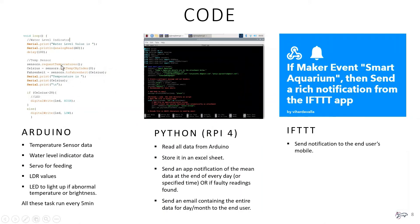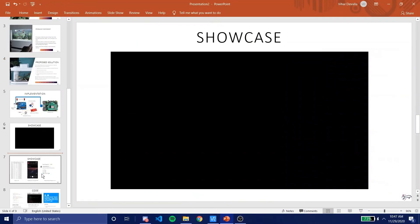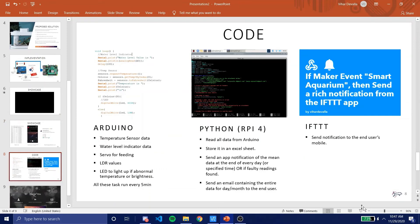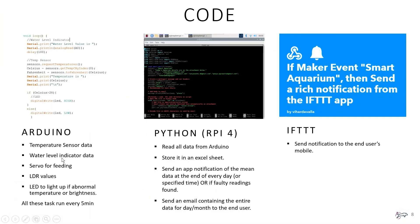Three separate codes are written: one for the Arduino to ensure all sensors are working and data is displayed on the serial monitor. This includes the temperature sensor, water level sensor, feeder — which feeds at particular intervals that can be modified — and LDR brightness values. LEDs light up if temperature goes above or below 30 degrees, or if LDR values or any other sensor readings are abnormal. All tasks run every five minutes, as they don't need to run every second.